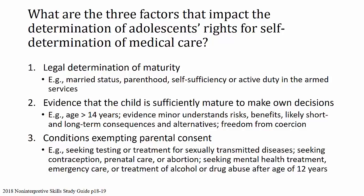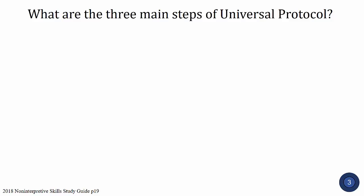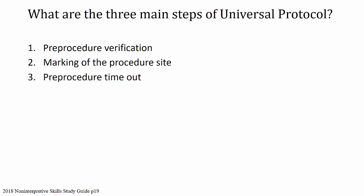Next question: what are the three main steps of universal protocol? The three main steps are: number one, pre-procedure verification; number two, marking of the procedure site; and number three, pre-procedure timeout.